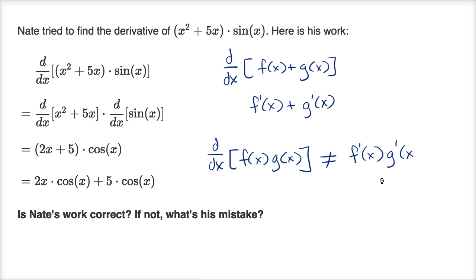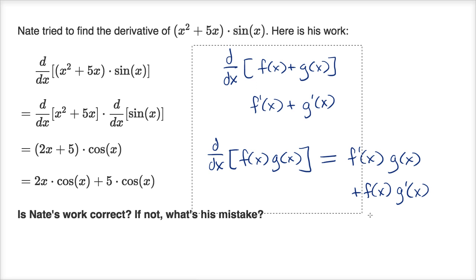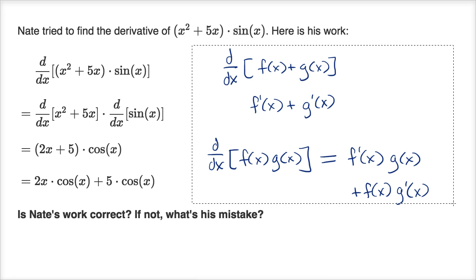Here we would want to apply the product rule. This is going to be equal to the derivative of the first function times the second function, plus the first function — not taking its derivative — times the derivative of the second function. So he should have applied the product rule here, and let's do that just to see what his answer should have been.